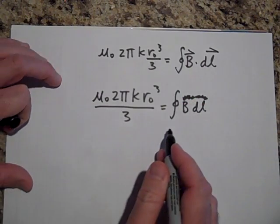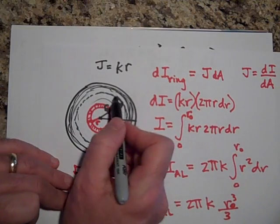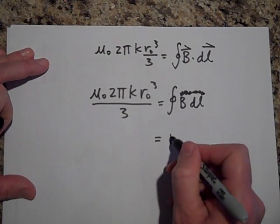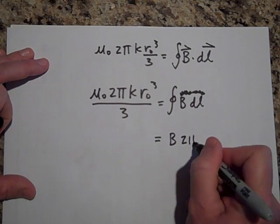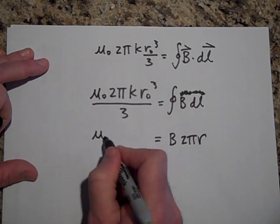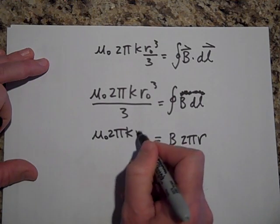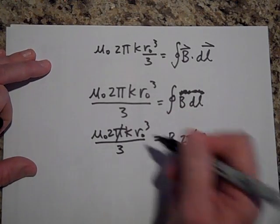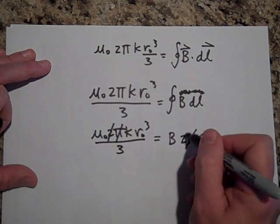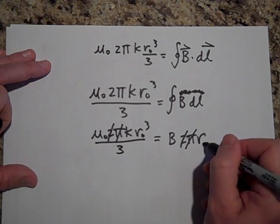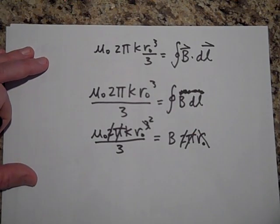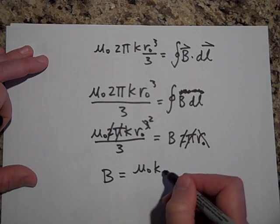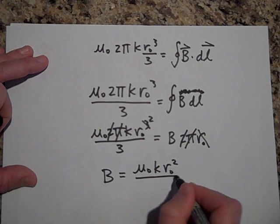I can pull the B out because why would B be any stronger here than here? It's all the same on there. And so, I'm left with B. And when I add up all the dLs, I'm going to get 2πR. Okay, I can get rid of a π, and I can get rid of a 2, and I can get rid of an R. This is really R₀, so I can get rid of it. That gets squared. And so, B is equal to μ₀KR₀² over 3.